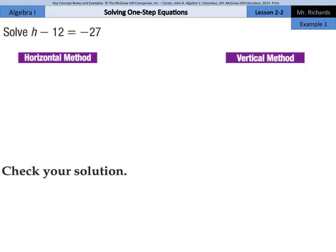As we look at example one, solve h minus 12 equals negative 27, we have a horizontal method way of solving and a vertical method of solving. I will start off by saying the vertical method is my preferred method, but I do want to teach you the horizontal method as well so you have exposure to it.